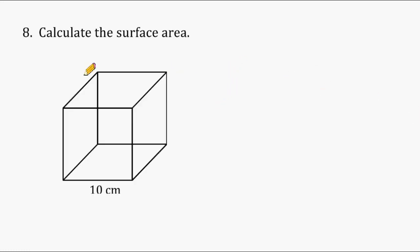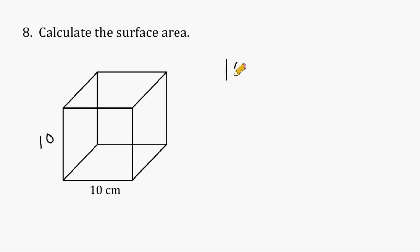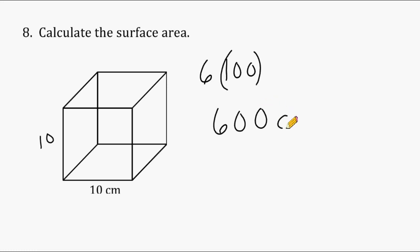We have a cube here. We take the number shown, which is 10, and multiply it by itself to get the area of just one of the six surfaces. So 10 times 10 is 100. We take that area and multiply it by 6, which results in 600 square centimeters.